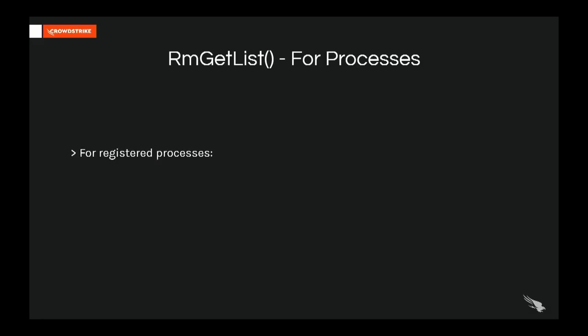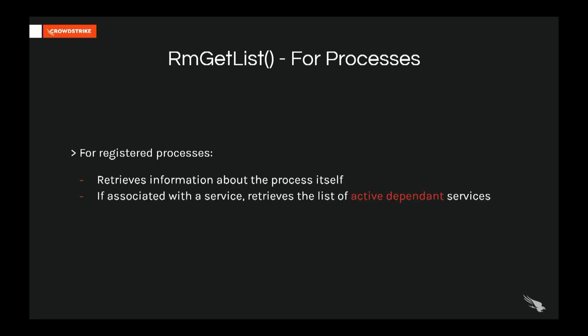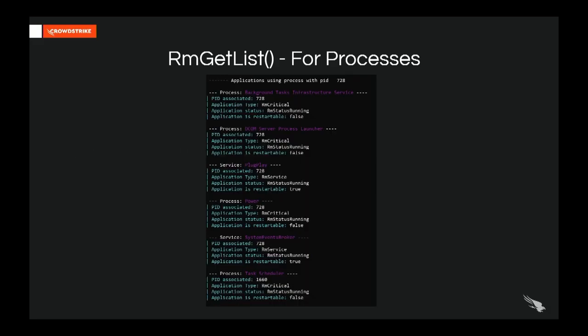Similarly for processes, the Restart Manager checks information about the process itself, and if the process is associated with a service, it retrieves the list of active dependent services. Using the same example but registering the process running System Events Broker by its PID (728), we can see all the services associated with that process, including System Events Broker and all other services running with the same process, and also Task Scheduler at the bottom of the list since it still depends on System Events Broker.